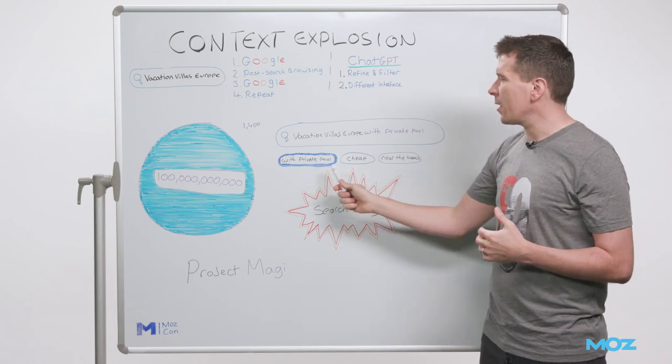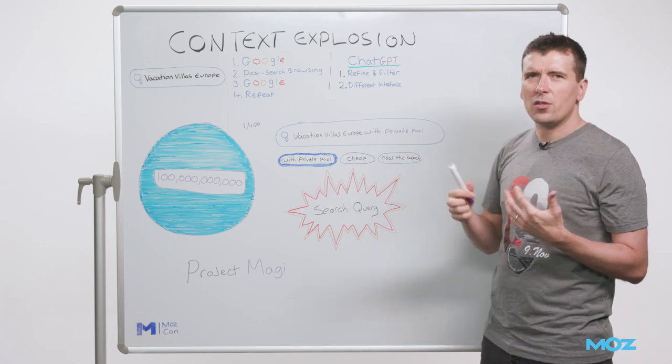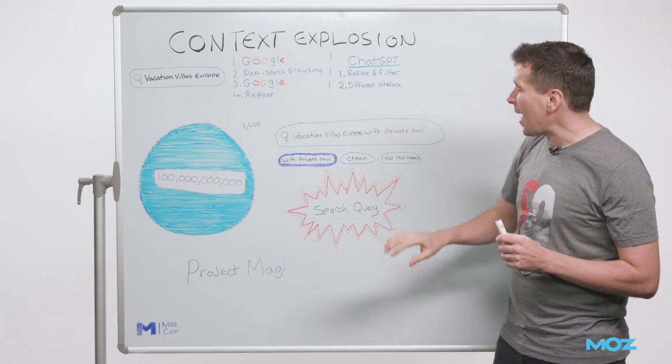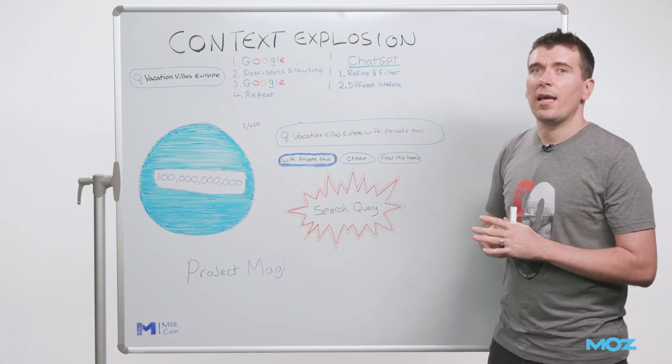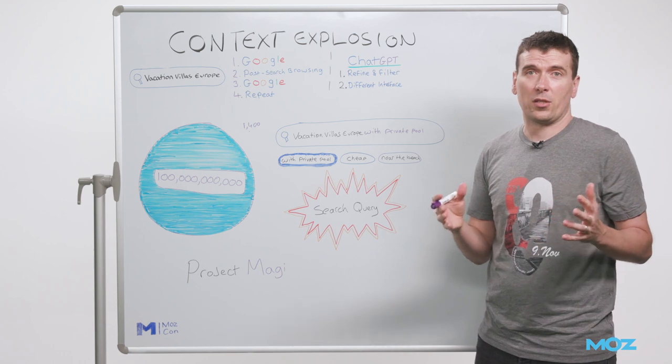And this is basically a way to incentivize users to add more explicit context, where historically, we've been trained not to do that. So I think this is going to lead to an absolute explosion in the length of queries that we're seeing for complex search queries.